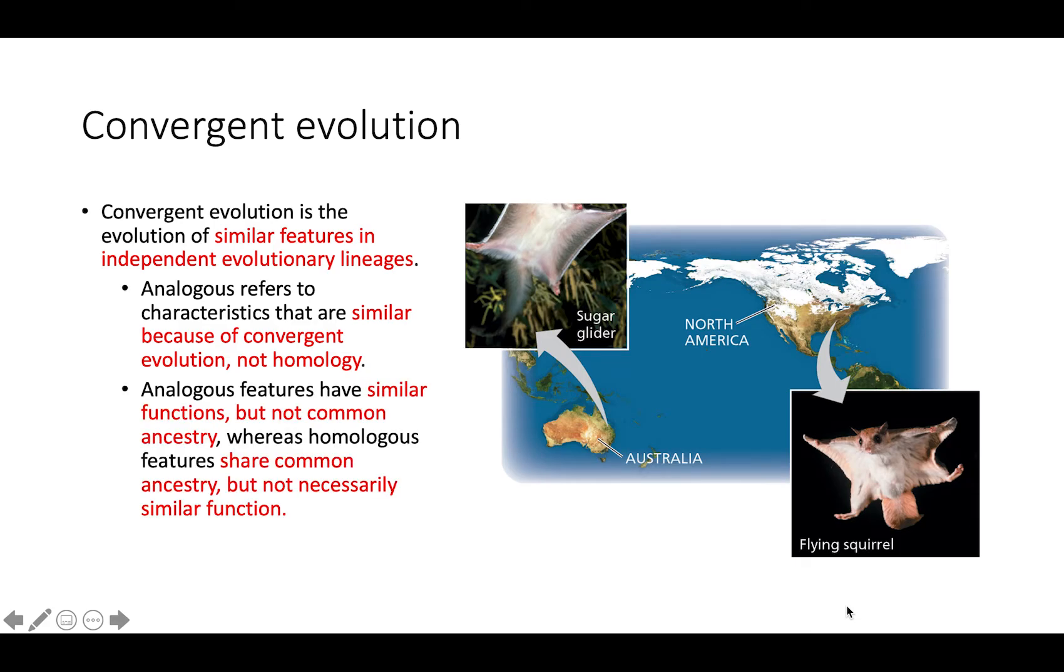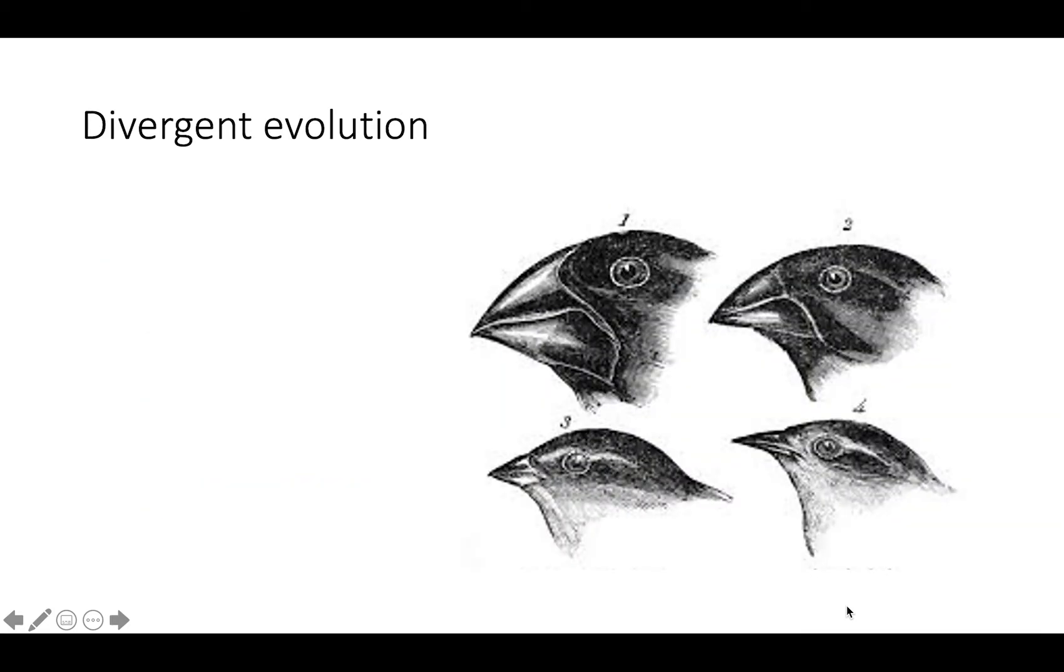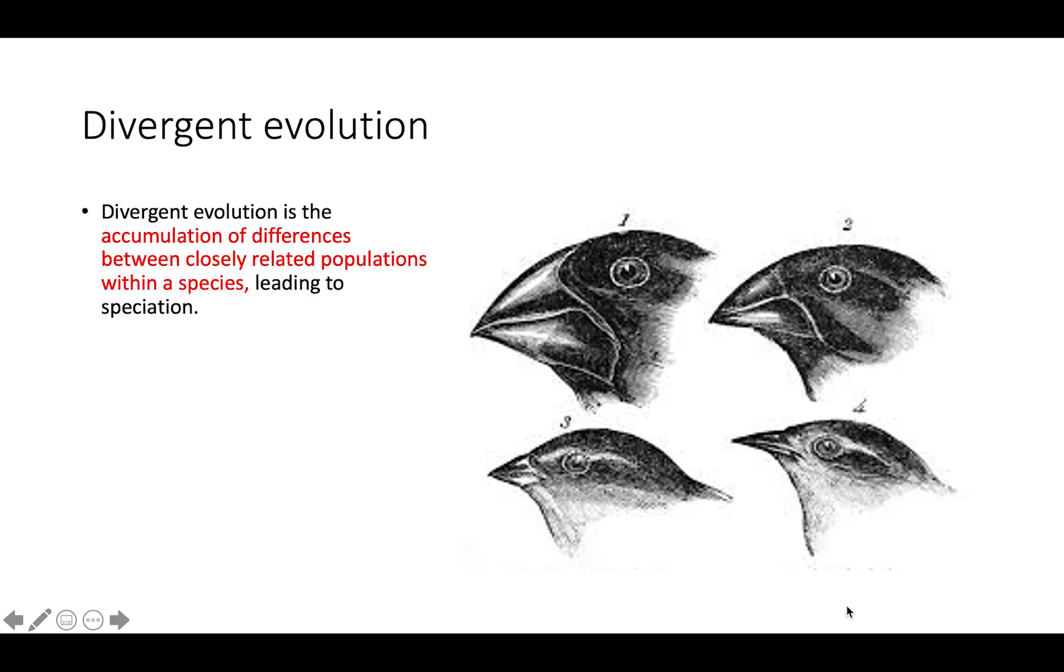Analogous features have similar functions but no common ancestry, and homologous features have common ancestry but don't always have a similar function. Divergent evolution is the accumulation of differences between closely related populations within a species that eventually leads to speciation.